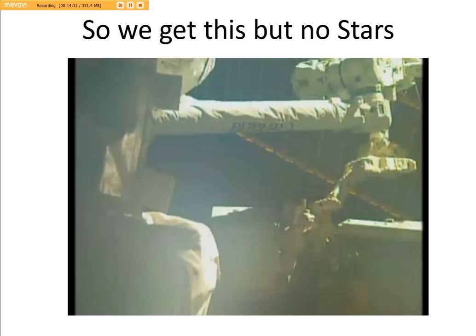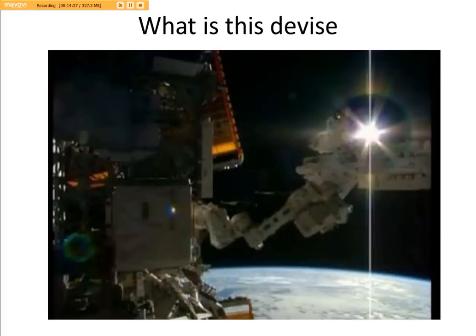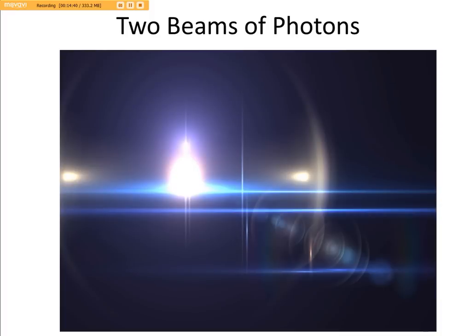So we get this: stars from the International Space Station, but we get no stars. And that's where that came from. I don't know what that device is, but apparently they understand the laws of photons. Apparently. Here is two photon beams in a lab experiment intersecting one another. So here is the dilemma.